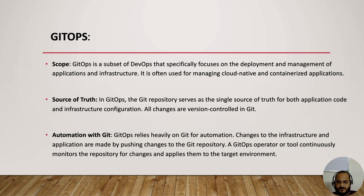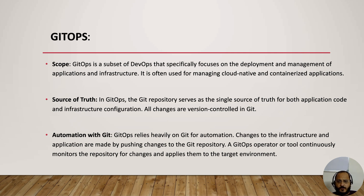GitOps relies heavily on Git for automation. Changes to infrastructure and applications are made by pushing changes to the Git repository. A GitOps operator or tool continuously monitors the repository for changes and applies them to the target environment, so all automation for your application is handled through the Git repo itself.